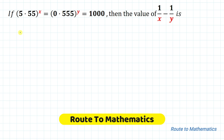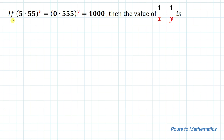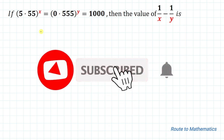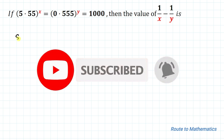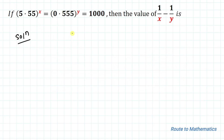Hello everyone, welcome to Root 2 Mathematics. In this video, we're going to solve this interesting question. The given question is: if 5.55 to the power x equals 0.555 to the power y equals 1000, then find the value of 1/x minus 1/y. Please subscribe to my channel and click the bell icon for further notifications.